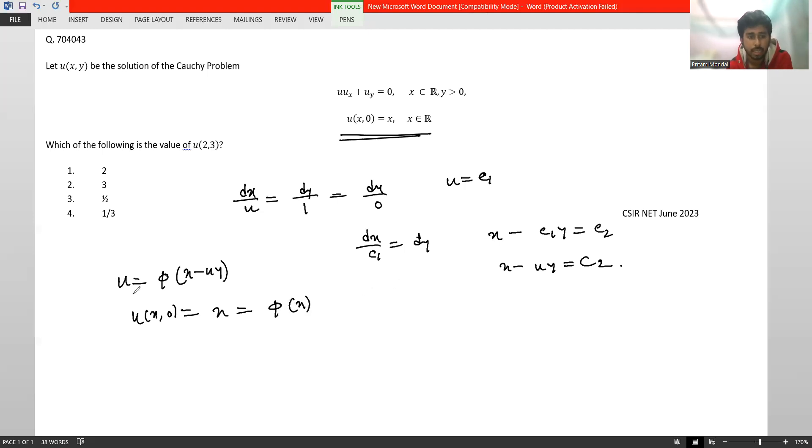Therefore, our general solution becomes u = φ(x). Therefore, φ(x - u*y) becomes x - u*y only.